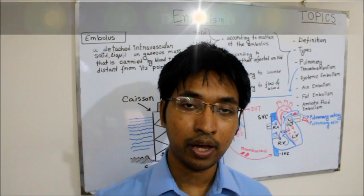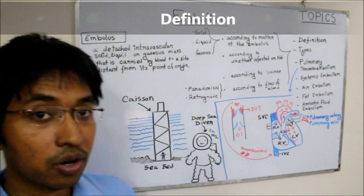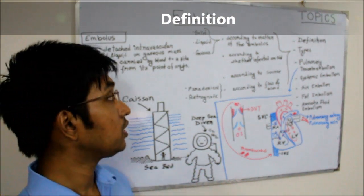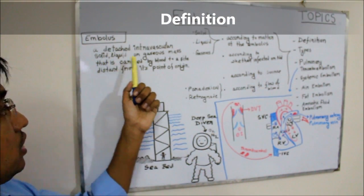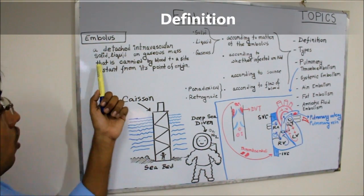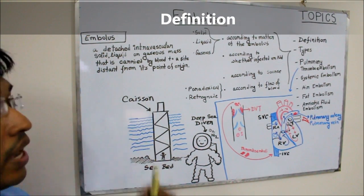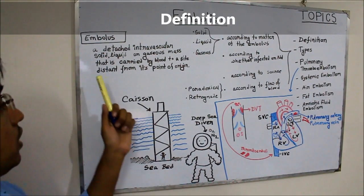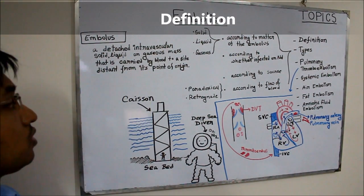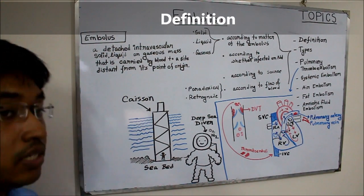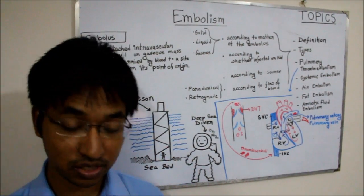As you can see from the board, embolus can be defined as the detached intravascular solid, liquid, or gaseous mass that is carried by blood to a site distant from its point of origin.